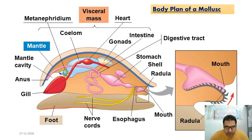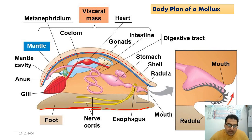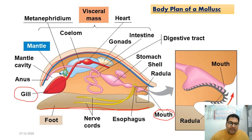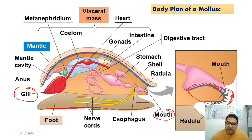In the generalized body plan of Mollusca, we can see the foot as an important distinctive feature, and the visceral hump — also called the mantle — which encloses all the visceral mass. In aquatic mollusks, gills are present, while in terrestrial mollusks a pulmonary sac is present. The radula is a rasping organ used for biting and digestion.